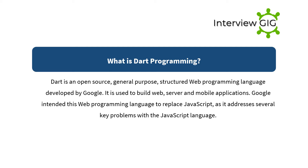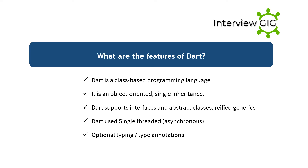What are the features of Dart? Dart is a class-based programming language. It is object-oriented with single inheritance. Dart supports interfaces and abstract classes, reified generics, single-threaded asynchronous execution, and optional typing/type annotation.